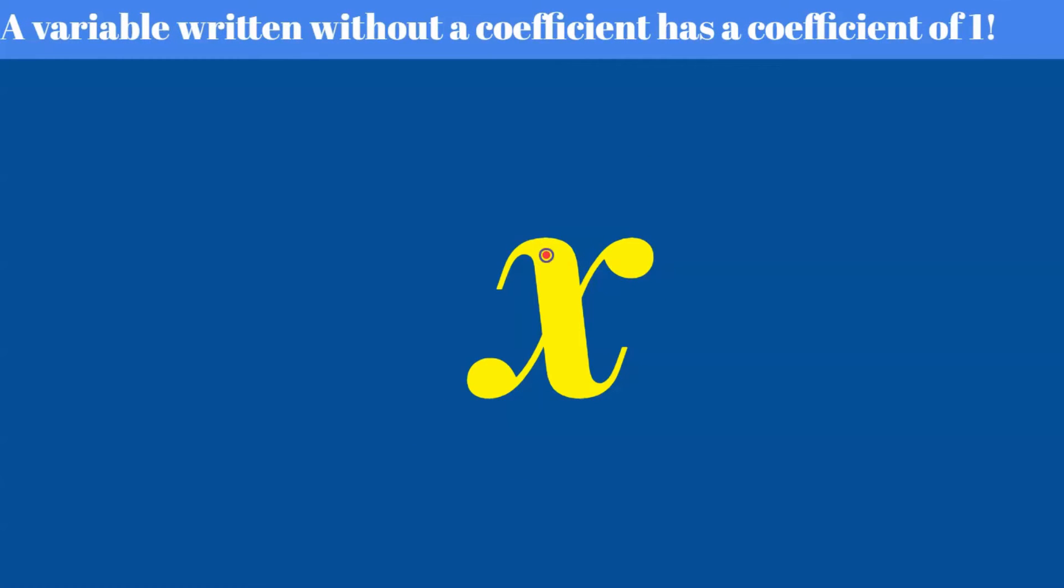It also has a coefficient of one. So there's your three ones. X is one x. It's like saying I have a cookie. You have one cookie. So x is really one x and any other number coefficient other than one needs to be written there. But when we see just x, it means one x.